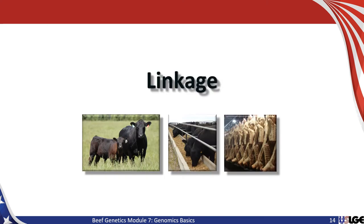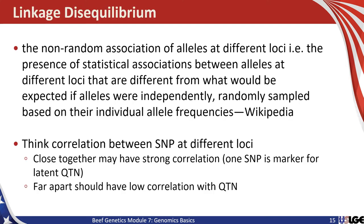Another important concept to understand in genomics is the idea of linkage. Linkage disequilibrium is the non-random association of alleles at different loci — the presence of statistical associations between alleles at different loci that are different from what would be expected if the alleles were independently randomly sampled based on their individual allele frequencies. That's a way of saying there's a correlation or association between variation at one locus and variation in DNA sequence at another that results in differences in performance.